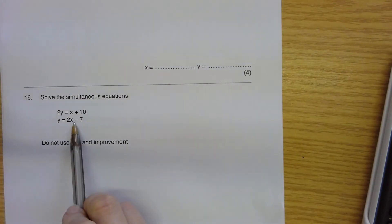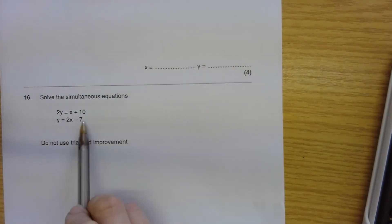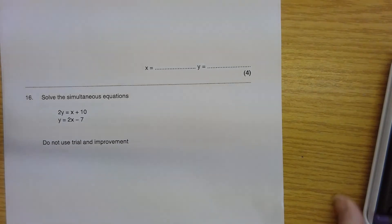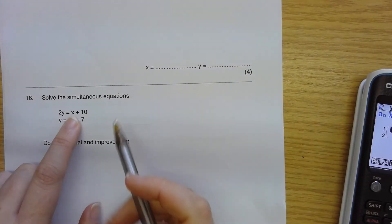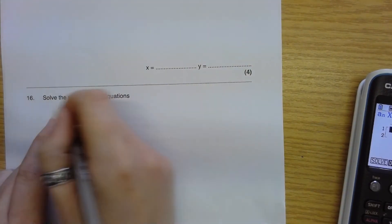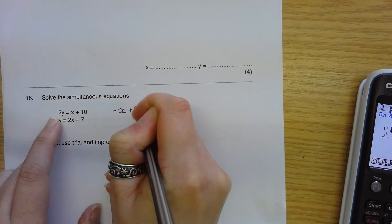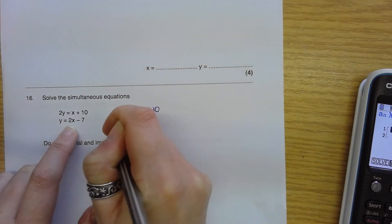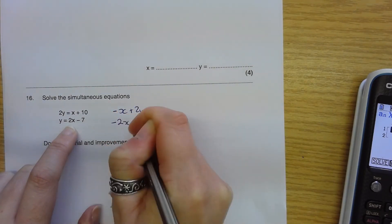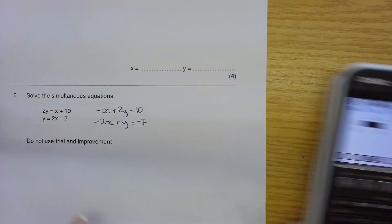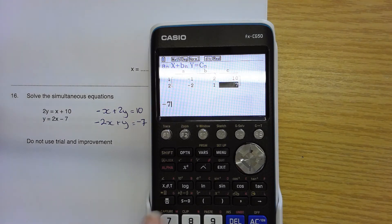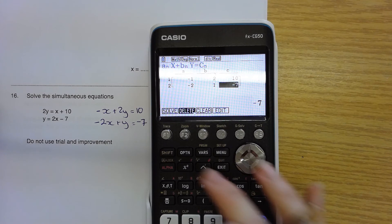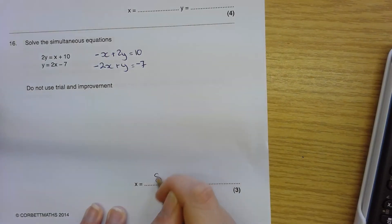Here it is different. So here I've got variables and numbers in the wrong places to use this format on the calculator. So I will need to do some rearranging. I will rearrange this to give me negative X plus 2Y equals 10. And this one to give me negative 2X plus Y is negative 7. Once I've done that, I enter the coefficients into the calculator. And solve. And it gives me the answers 8 and 9.